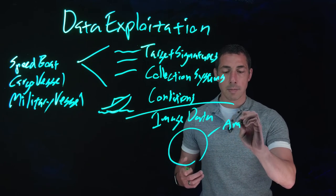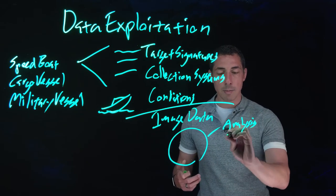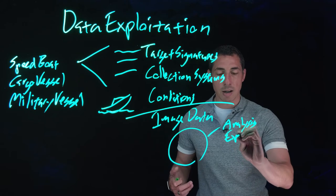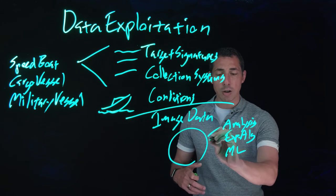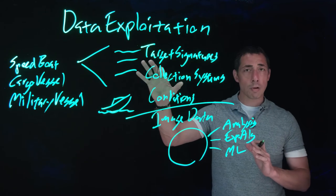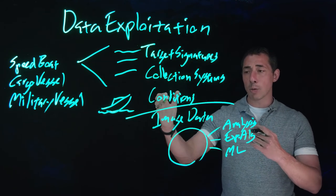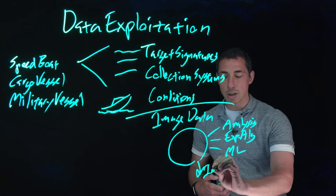It can be done with a human analyst, it can be done with some type of exploitation algorithm, or it can be some type of machine learning loop where you're taking these known parameters, and you're combining them with the image data, and you're producing some type of intelligence.